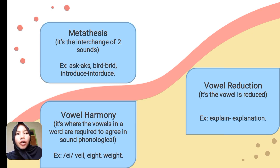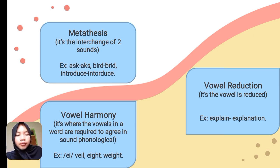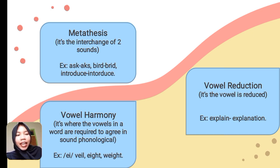The next type is vowel harmony. Vowel harmony is where the vowels in a word are required to agree in sounds phonologically. For example, the vowel 'a' in words like 'veil', 'eight', and 'weight'.